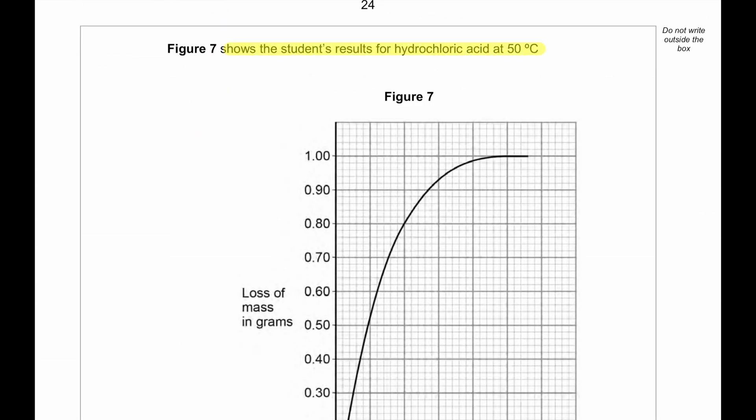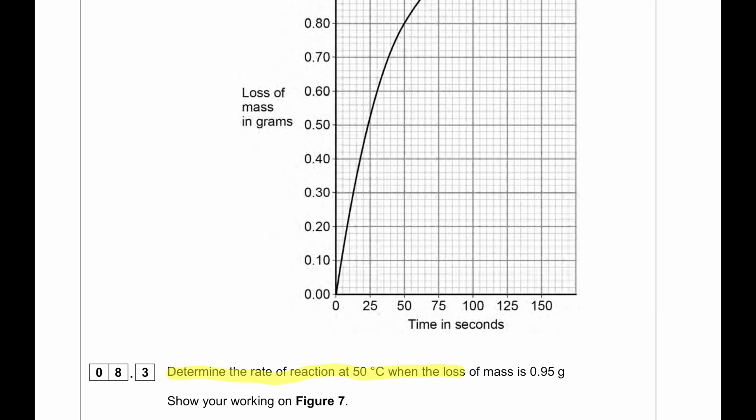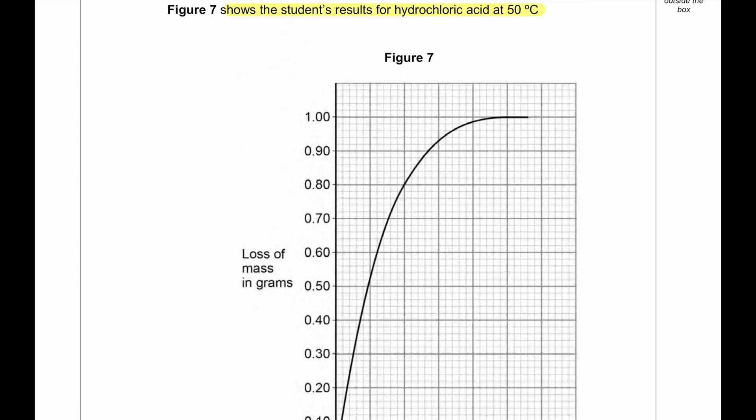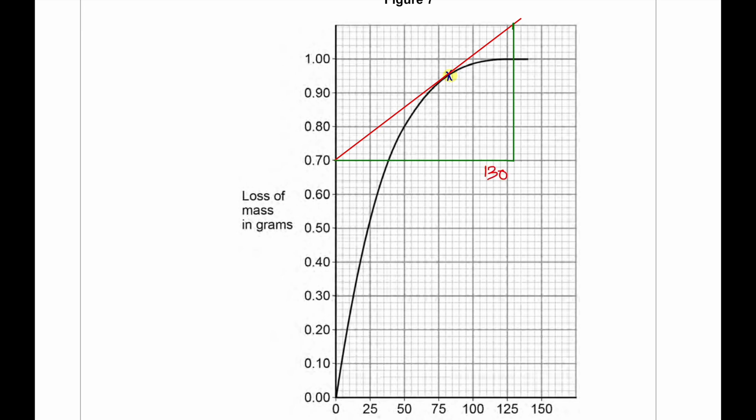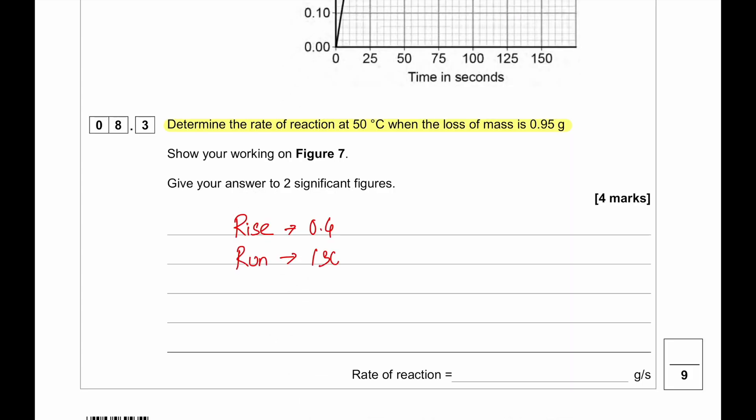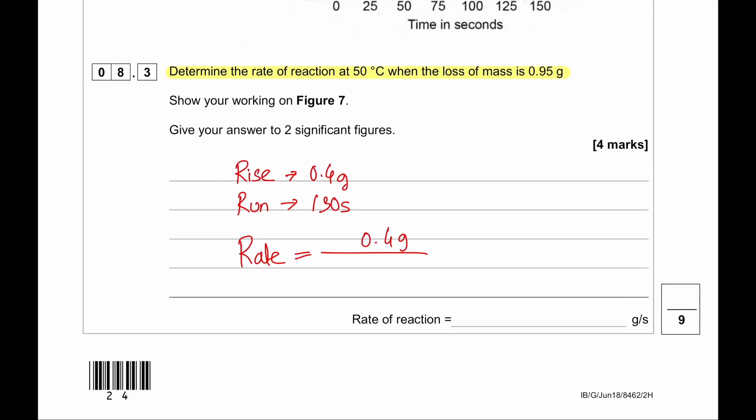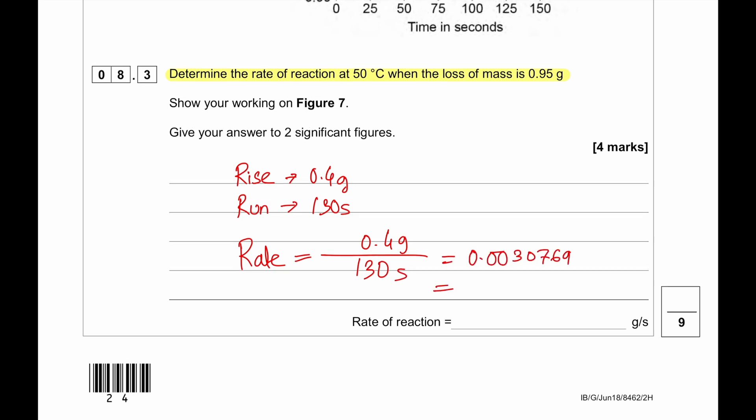Figure 7 shows the student's result for hydrochloric acid at 50 degrees Celsius. Determine the rate of reaction at 50 degrees Celsius when the loss in mass is 0.95 grams. At 0.95 would be this particular point. Now, in order to find out the rate at that particular point, we would have to draw a tangent only touching that particular point. Then we have to calculate the rise over run to find out the gradient. 130 for the run and the rise is 0.4 grams. So our rate will be 0.4 grams divided by 130 seconds. So the answer is 0.0030769, which we have to give the answer in three significant figures.